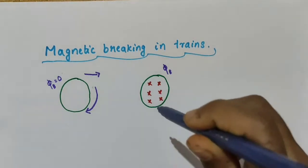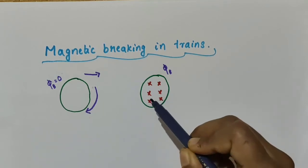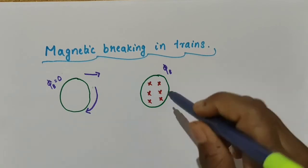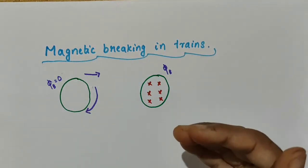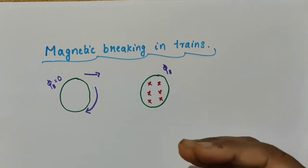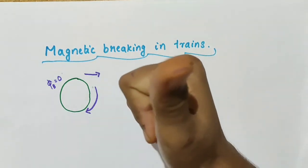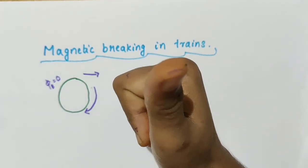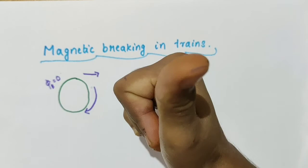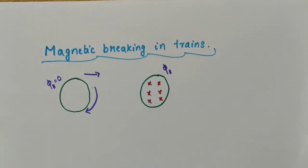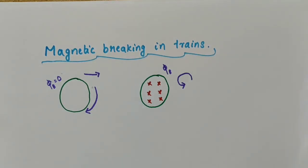The magnetic field here is directed into the plane of the whiteboard. To oppose those magnetic field lines, the induced eddy current must flow through the metal wheel in such a direction that it produces a magnetic field coming out of the plane of the board. Using the right-hand thumb rule, if the eddy currents flow in the counterclockwise direction, then the magnetic field associated with that current will be directed out of the plane of the board, which opposes the change in flux. So the current flows in the counterclockwise direction.